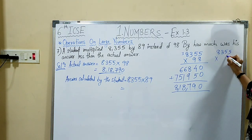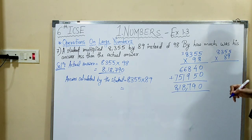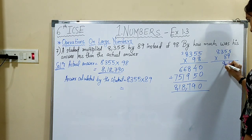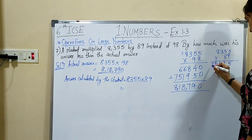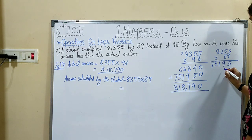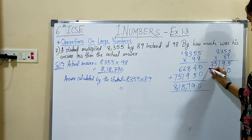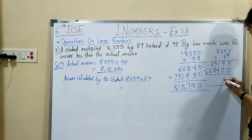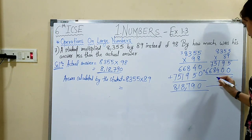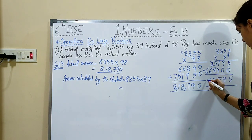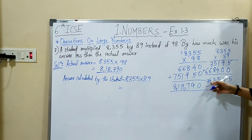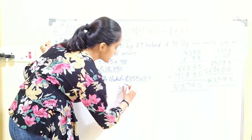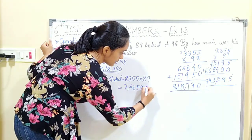Answer calculated by the student: 8,355 multiplied by 89. Working through this multiplication, the student's answer is 7,43,595.